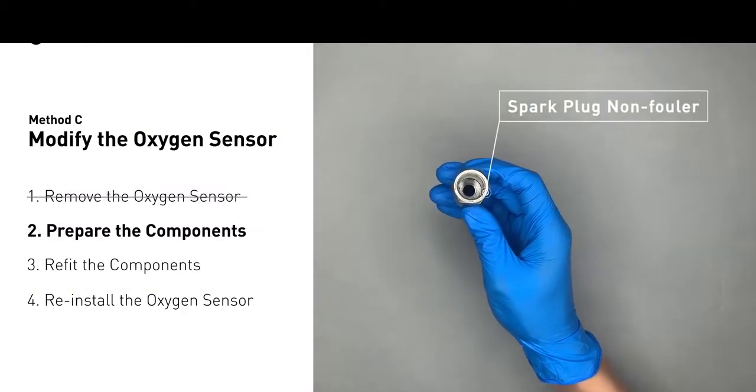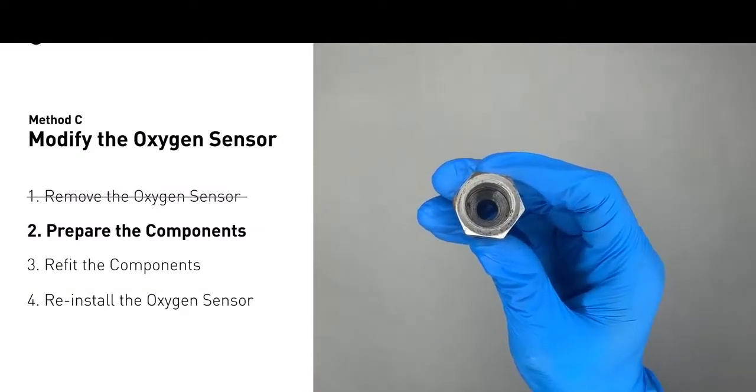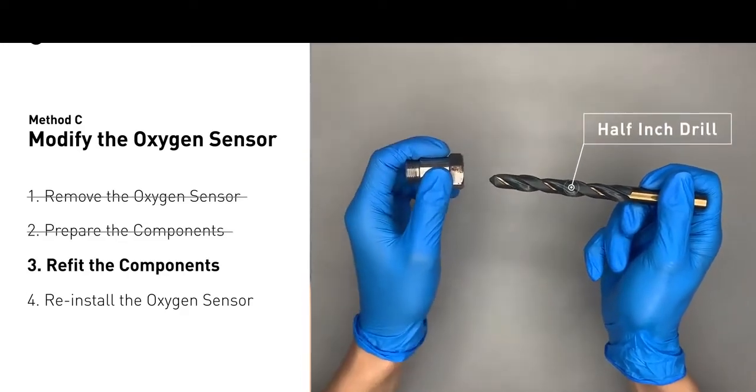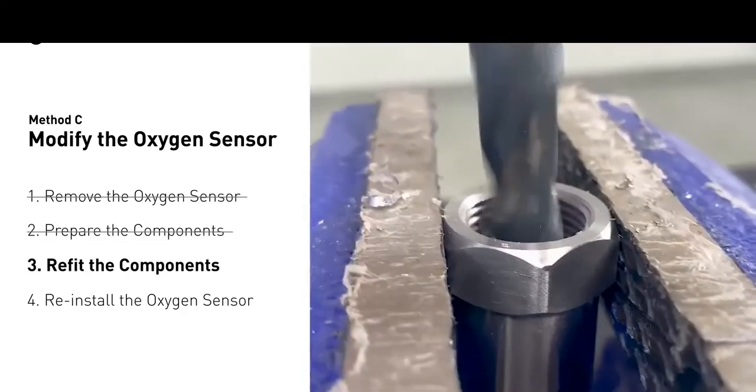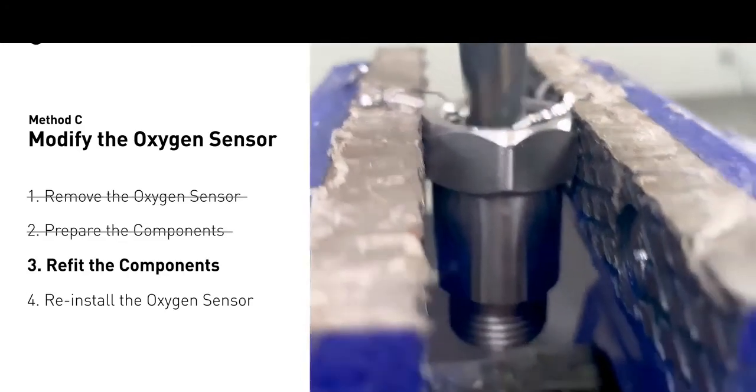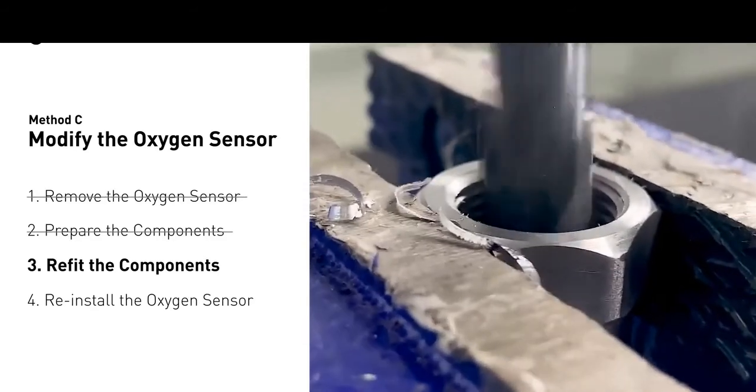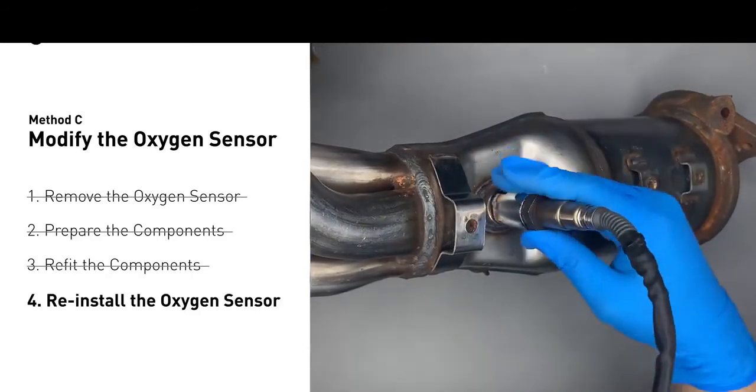Then use a half-inch drill to refit it. By doing this, the spark plug non-fouler now has enough space to fit into the oxygen sensor. Put them together and put them back on the catalytic converter.